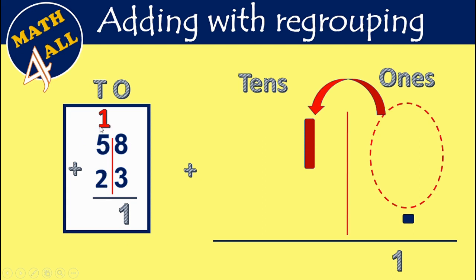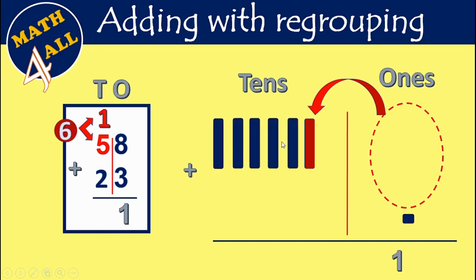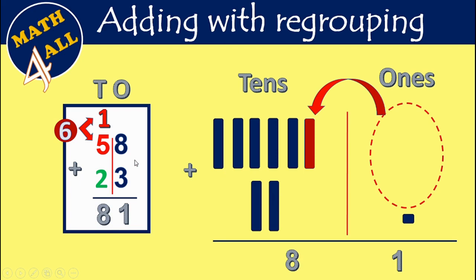Now we will add the tens place. We have 1 plus 5 plus 2. 1 plus 5 equals 6, then 6 plus 2: after 6 — 7, 8. I will write 8. So 58 plus 23 equals 81. This is regrouping: when I get two digits in the same place, I will carry up 1 to the next place. Let's see the next example.